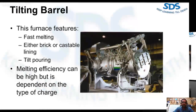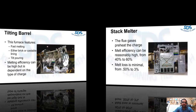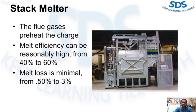Another reverberatory furnace type is the stack melter. In this furnace, melt efficiency can be reasonably high — from 40 to 60 percent — as the flue gases preheat the charge. The melt loss is minimal, from 0.5 to 3 percent.